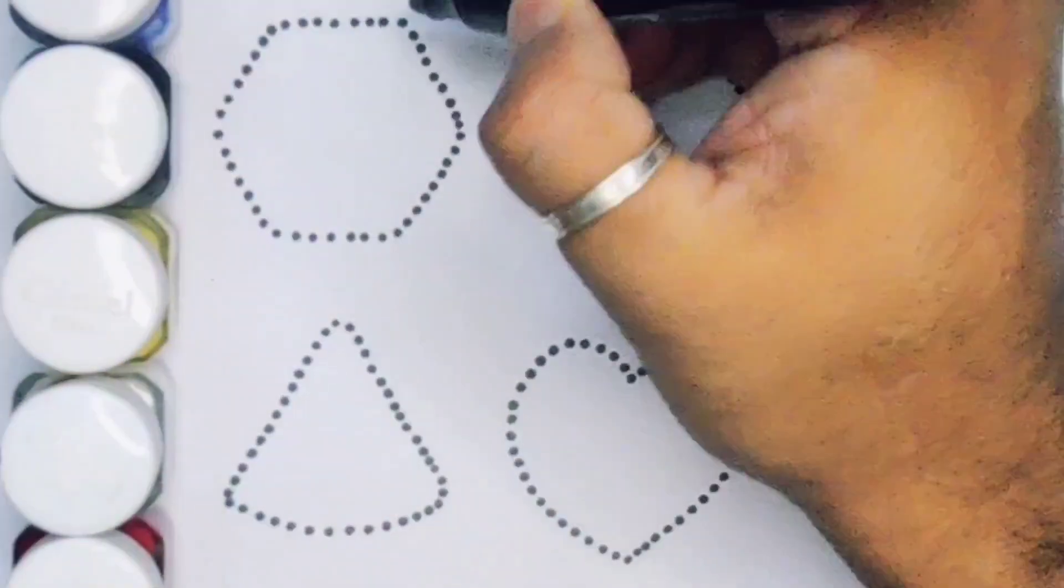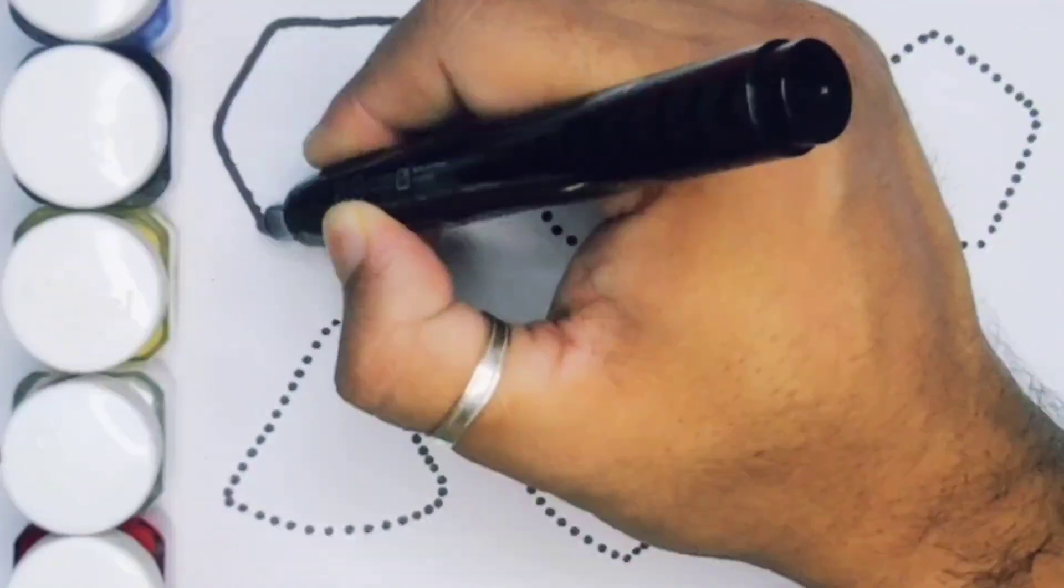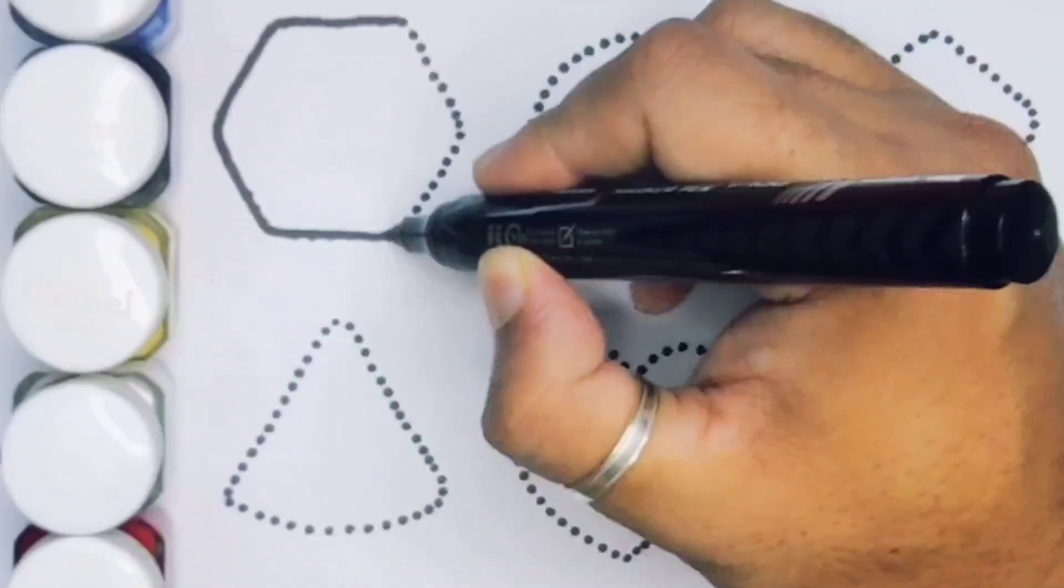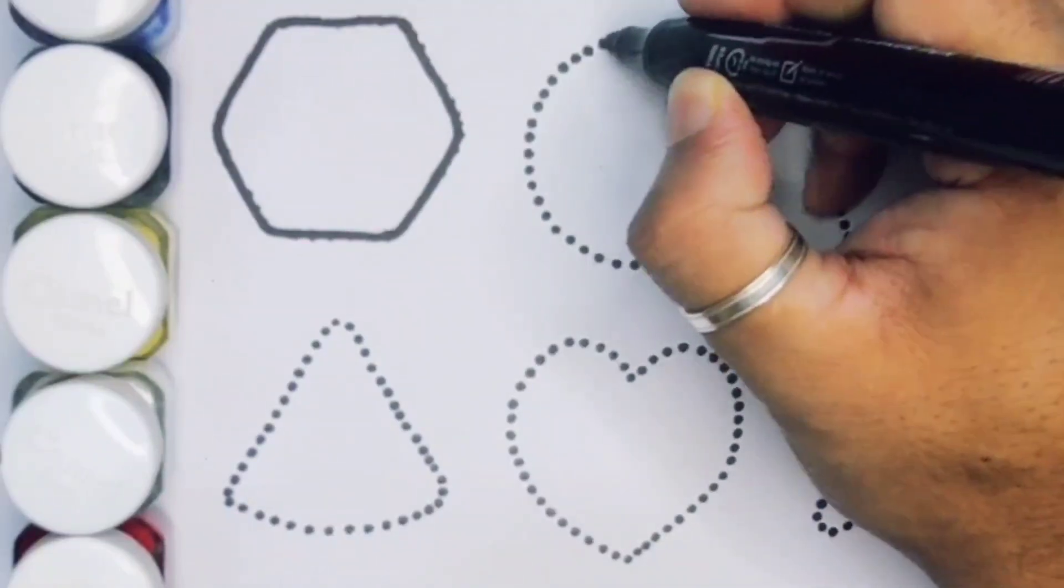First we are going to draw the shapes. Hexagon. Next circle.